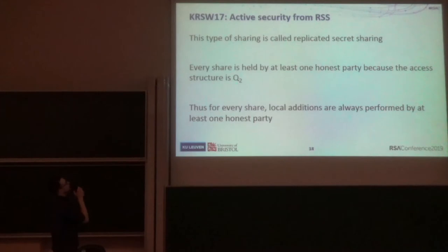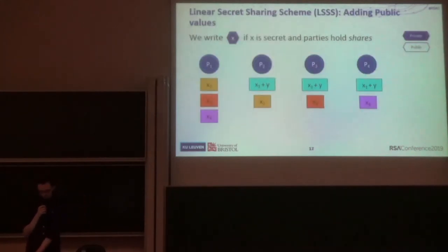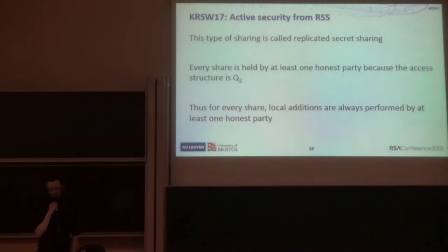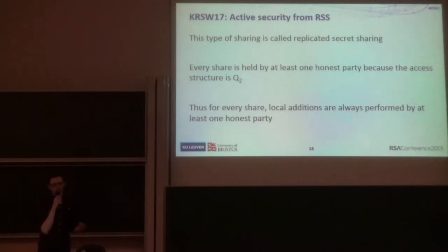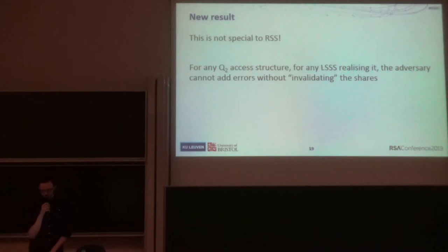Previous work by Keller et al. showed that you can share your secrets in a so-called replicated secret sharing. They showed that if you do that, every share is held by at least one honest party if the access structure is Q2. Because of that, if you're doing local additions, at least one honest party is going to be doing the correct local addition. So you get some sort of active security when doing local operations. What we've shown in this paper is that this isn't special to replicated secret sharing — this is actually an aspect of the fact that the linear secret sharing scheme realises a Q2 access structure.